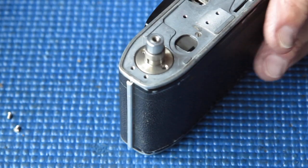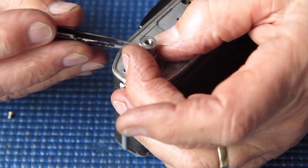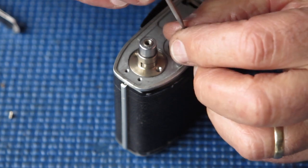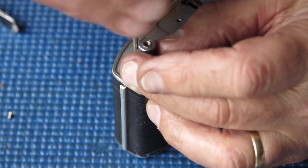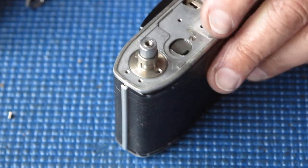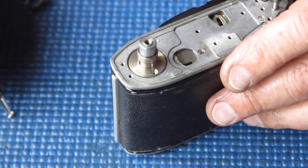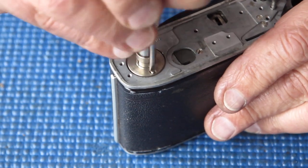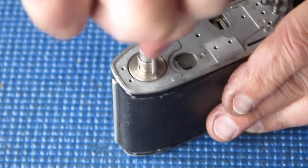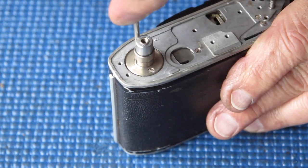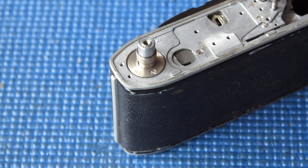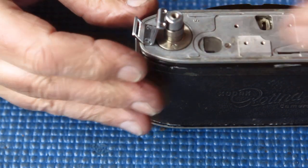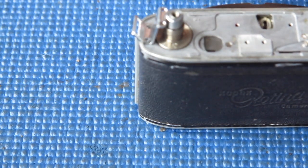You can see where the chrome has rubbed off that shaft over time it probably means it was dusty or gritty and as a result it's just abraded away that chrome plating. Do those two screws up tight. That's our rewind shaft in place.